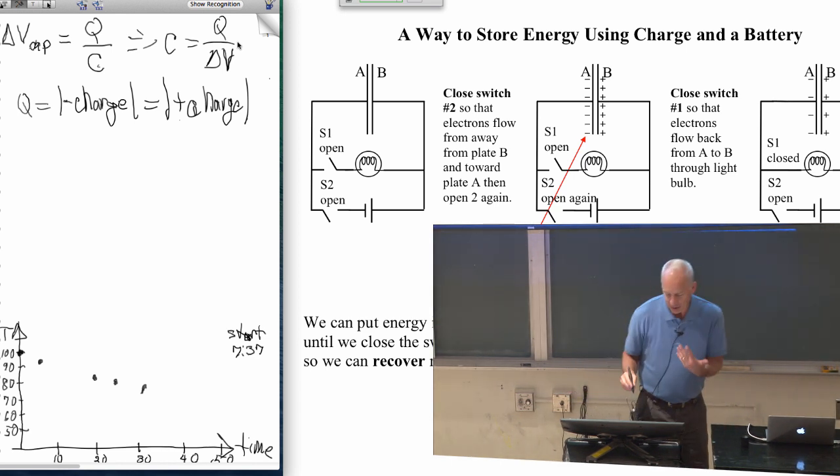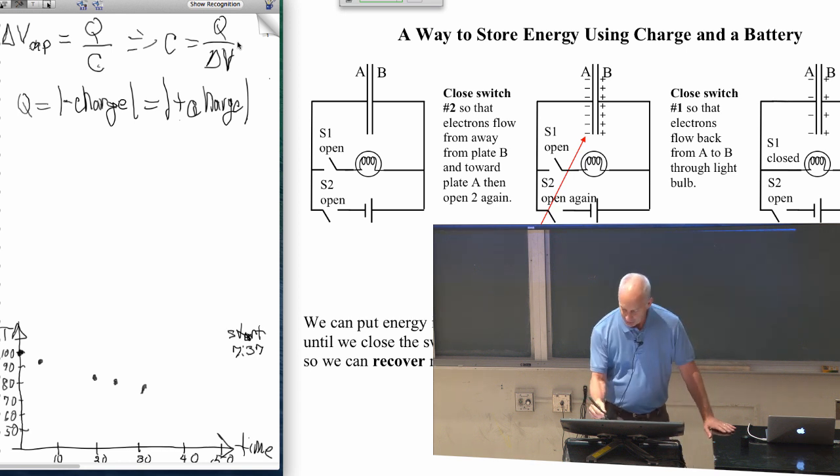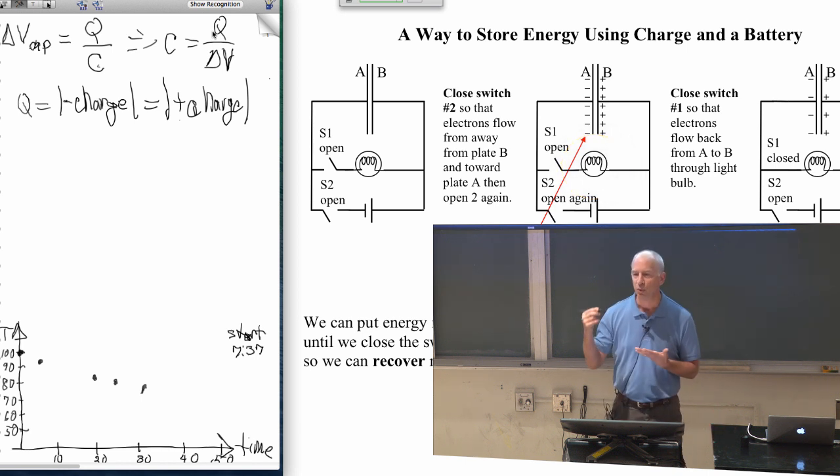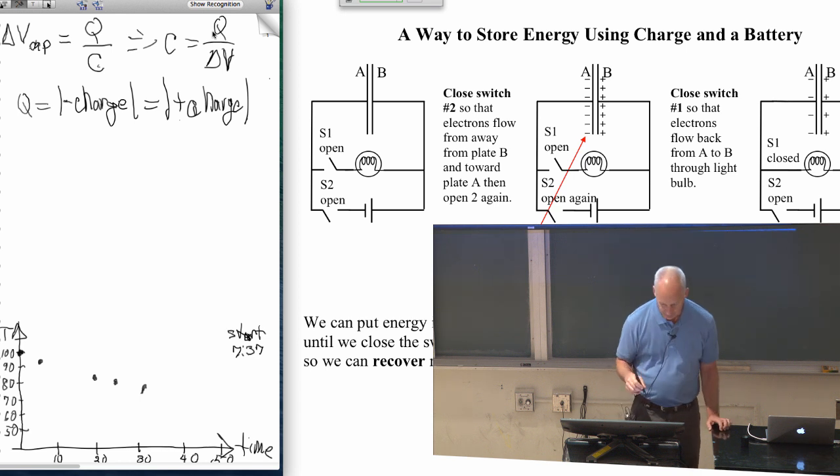So what I was saying earlier was, when you first connect the light bulb, the voltage across the capacitor is big because it has a big charge. And so the current through the light bulb is big. What is current? Current is the rate of change of charge. So if the current is big, then the capacitor is losing charge fast.